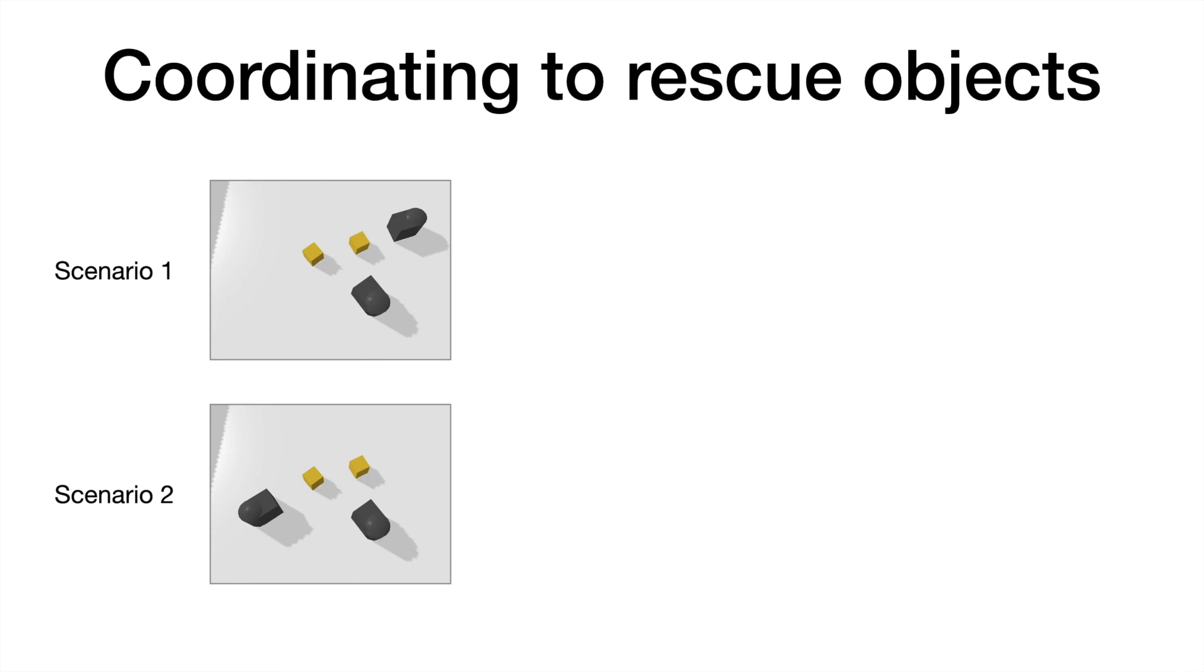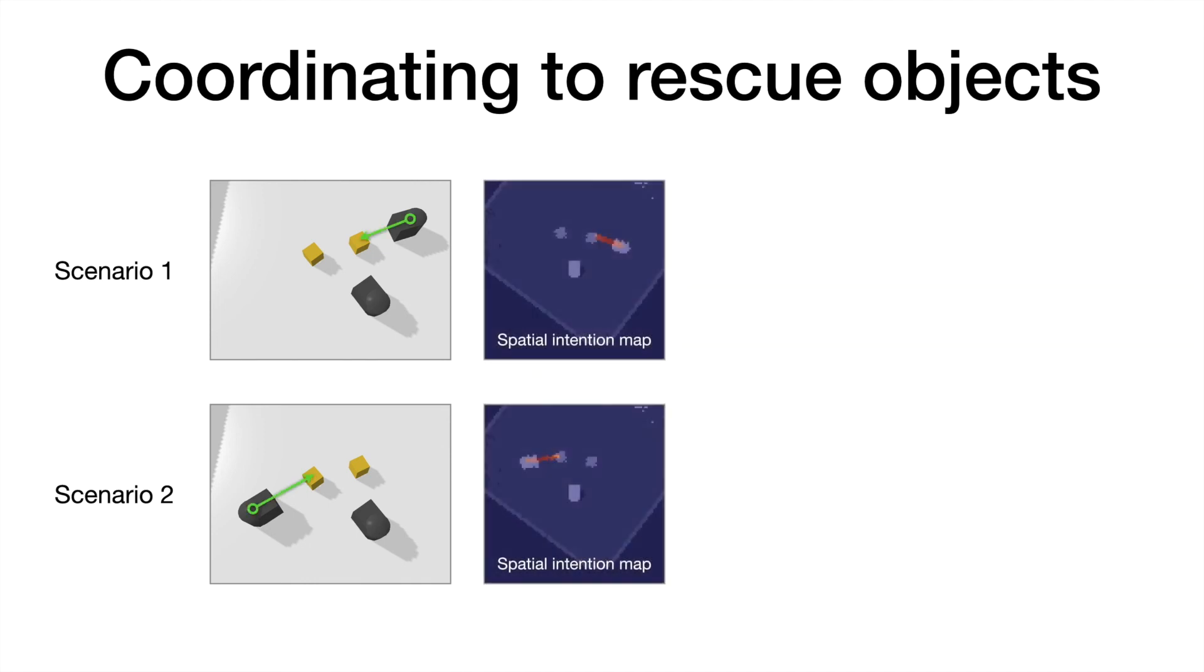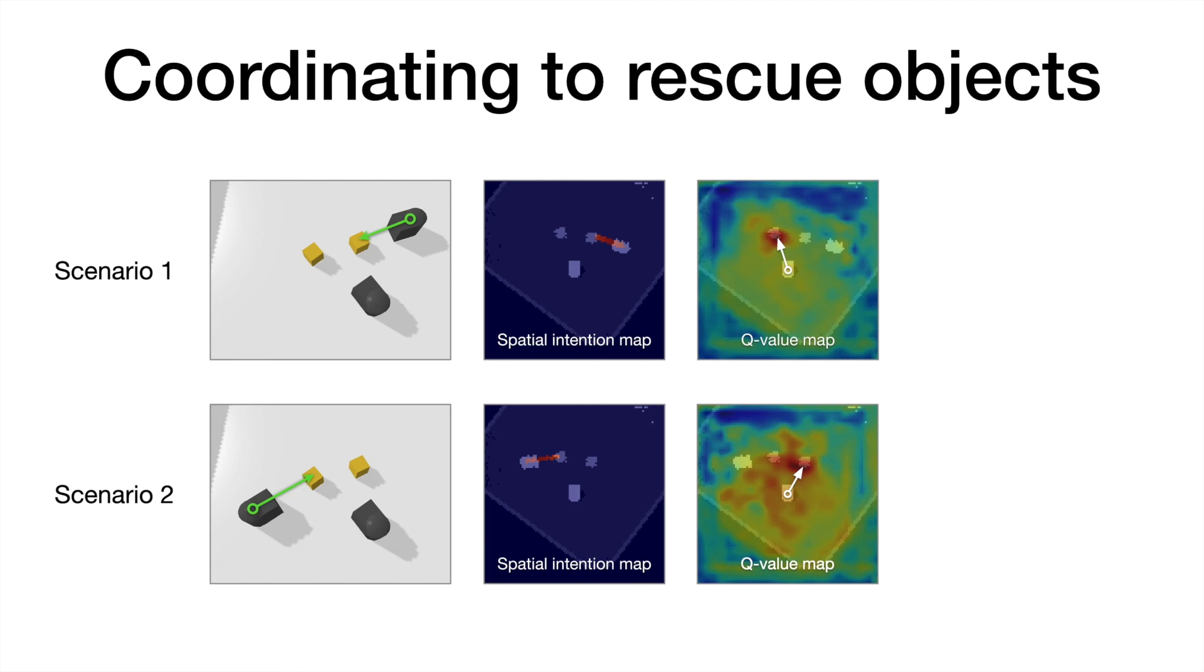Here is a pair of scenarios with two rescue robots and two objects. In each scenario, we choose a different object for the top robot. And then we check the Q value maps for the bottom robot. In both cases, the bottom robot selects the other object and avoids overlapping of efforts.